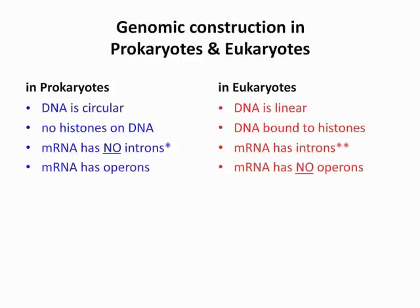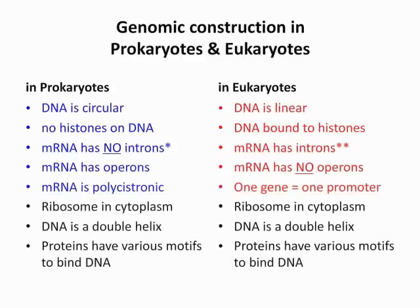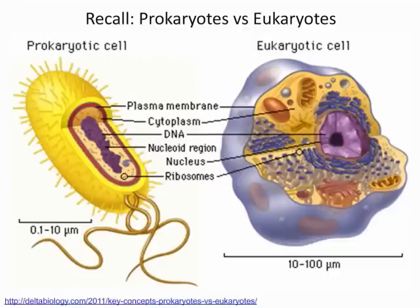Learning objective 4 covers the difference in genomic construction in prokaryotes and eukaryotes — this would be a good slide to memorize. He could ask where ribosomes are found in a prokaryote — answer: the cytoplasm. Key differences: prokaryotic cells don't have membrane-bound organelles, they don't have a nucleus, and transcription and translation occur simultaneously in prokaryotes.